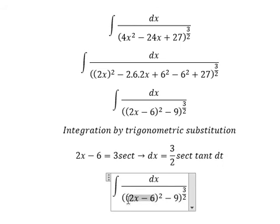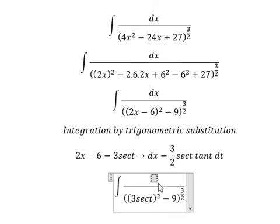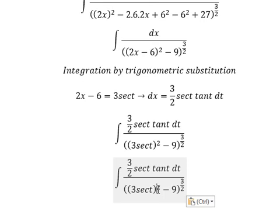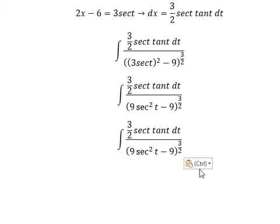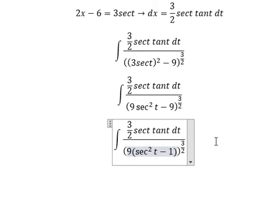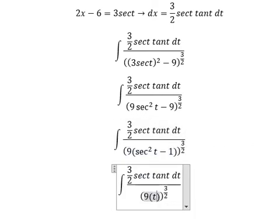This one, we change 3 sec of t. The dx, we change by this one. This one is about 9 sec of t square. So number 9, number 9, we can do factorization.